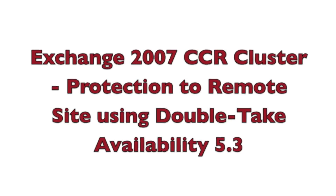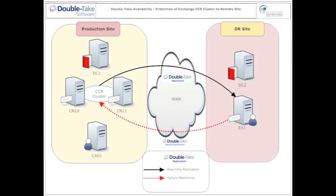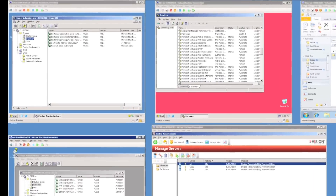Protection of an Exchange 2007 CCR cluster. CCR clusters, or continuous cluster replication, provide a valid way to protect an Exchange server locally. However, they don't give you a valid option to get the data out of the building, easily fail over your Exchange organization, and fail it back. This is where Double Take Availability comes into the equation — it's very easy to protect an existing cluster or standalone Exchange server to a remote site, with very little downtime impact on users.